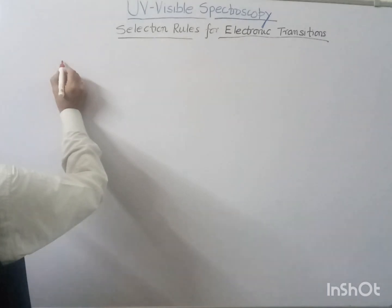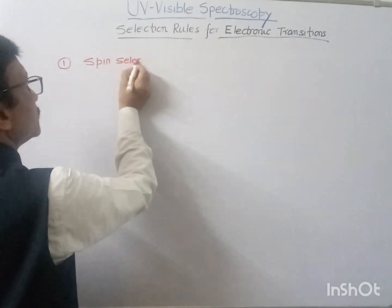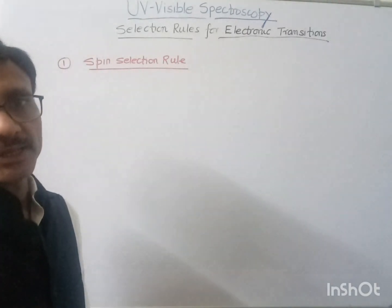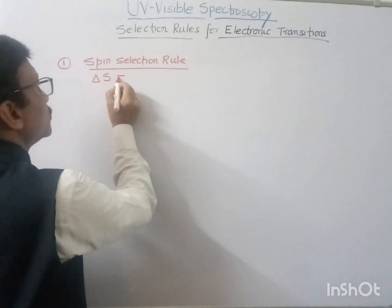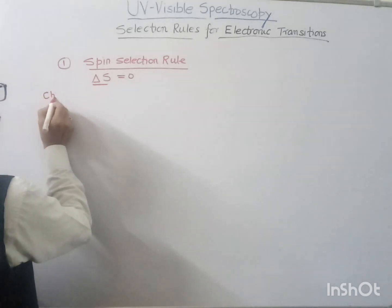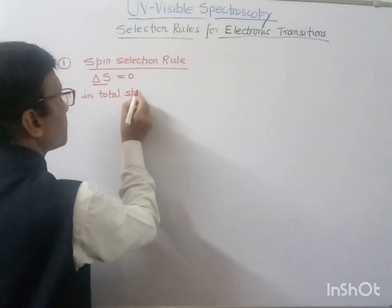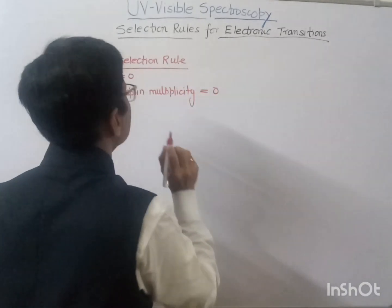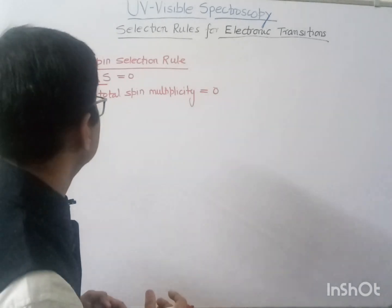One of the selection rules is the spin selection rule. According to this rule, the total spin multiplicity during the electronic transition should not change. That is, delta S equals zero, where delta S is the change in total spin multiplicity during the electronic transition when a transition occurs from ground state to excited state.